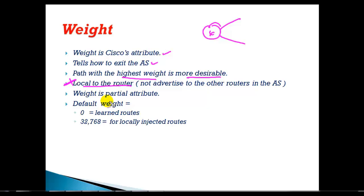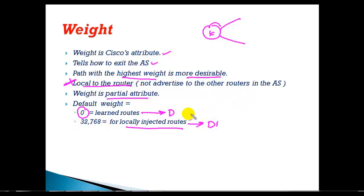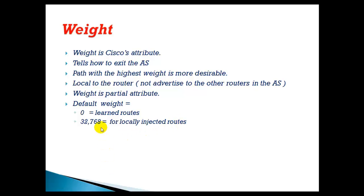Weight is a partial attribute. The default weight for all locally originated routes — which are directly connected networks — will always be 32768. For routes which are not directly connected, the default weight is zero, meaning routes coming from a different router.